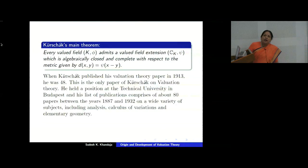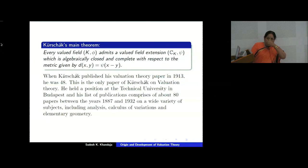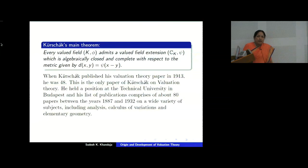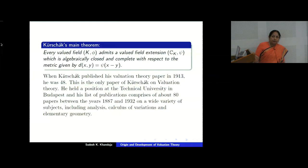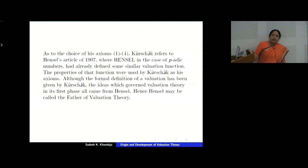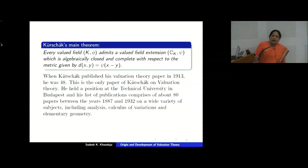Kurschák's main theorem states that every valued field K, phi admits a valued field extension CK, psi, where CK is a field containing K, the mapping psi extends phi, and CK is algebraically closed and complete with respect to the metric given by the distance between x and y equal to psi of x minus y for any x, y belonging to CK. When Kurschák published his valuation theory paper in 1913, he was 48. This is the only paper of Kurschák on valuation theory. He had a position at the technical university in Budapest, and his list of publications comprises about 80 papers between 1887 and 1932 on a wide variety of subjects.